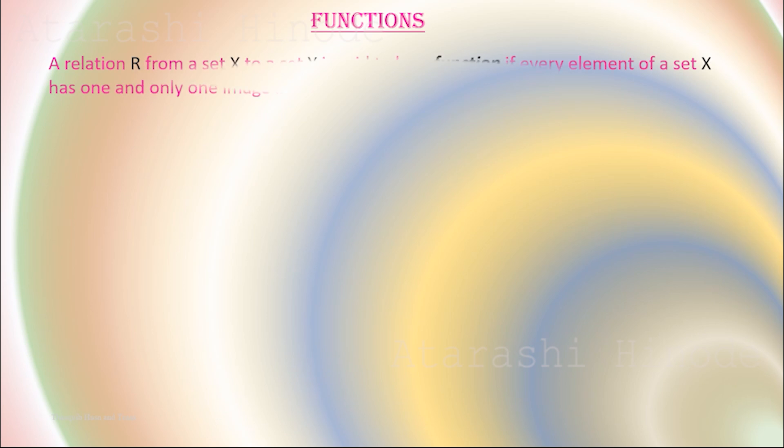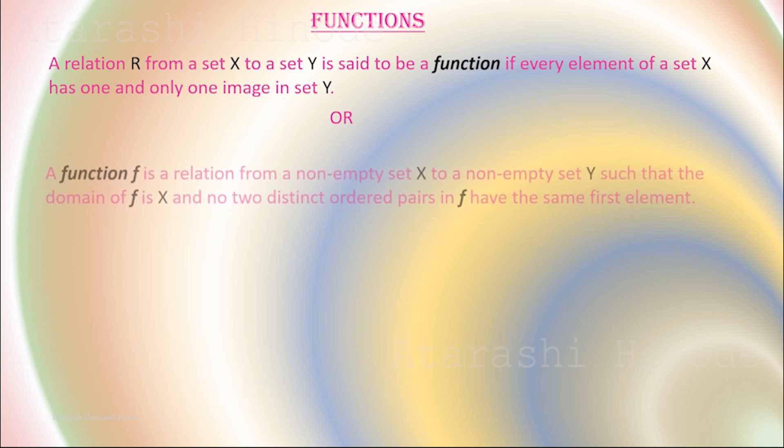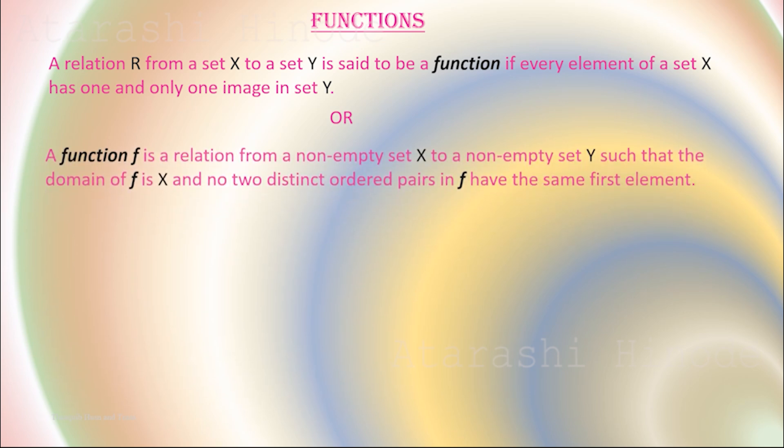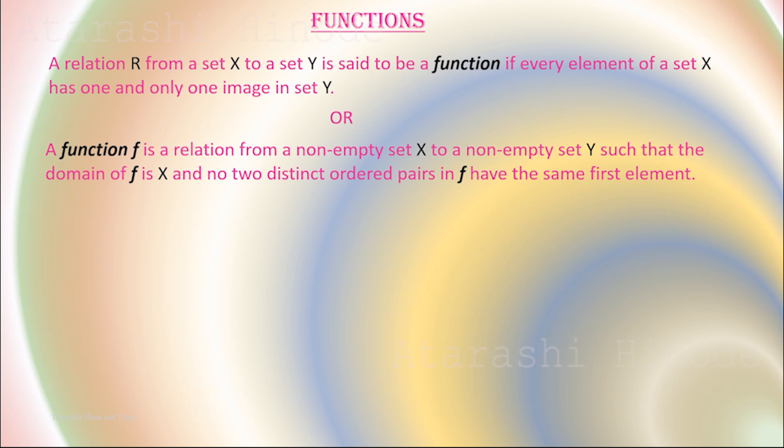A relation R from a set X to a set Y is said to be a function if every element of set X has one and only one image in set Y. Or, in other words, a function f is a relation from a non-empty set X to a non-empty set Y such that the domain of f is X and no two distinct ordered pairs in f have the same first element.